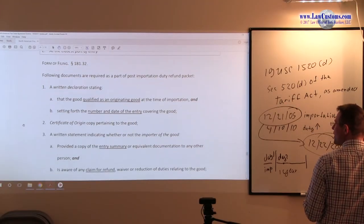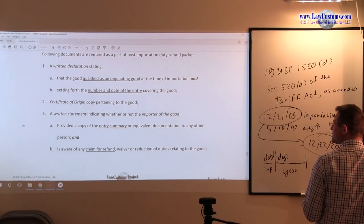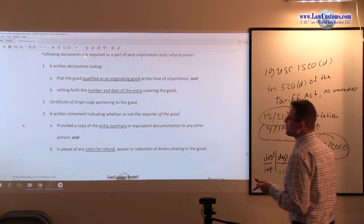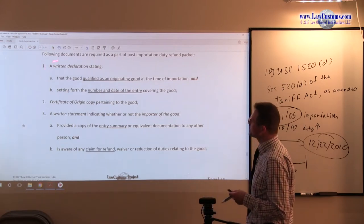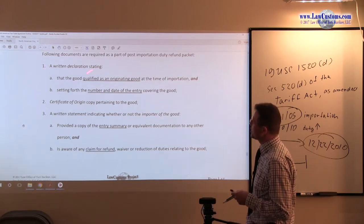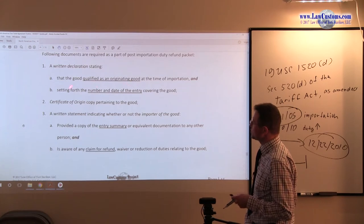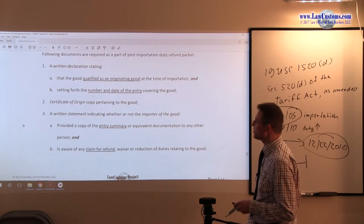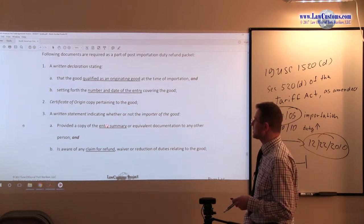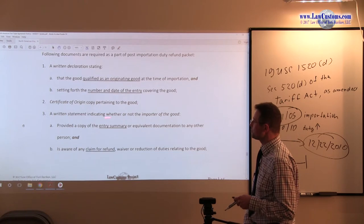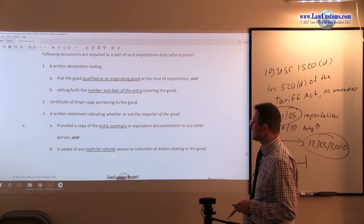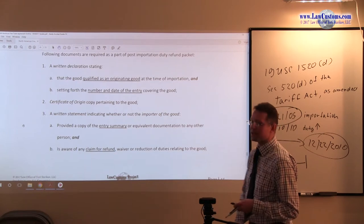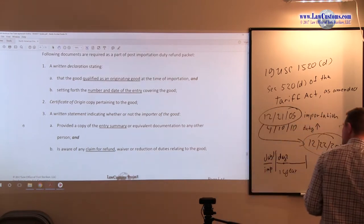Form of filing. Notice that there is a laundry list of stuff that we need to be mindful of. You must have a written declaration that the good is qualified, is originating. You must provide the number and date of entry. You must give a copy of certificate of origin, a written statement where the importer of good provided the entry summary, and whether there has been any refund or awareness of the refund.